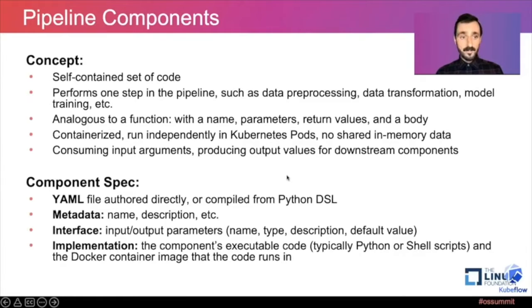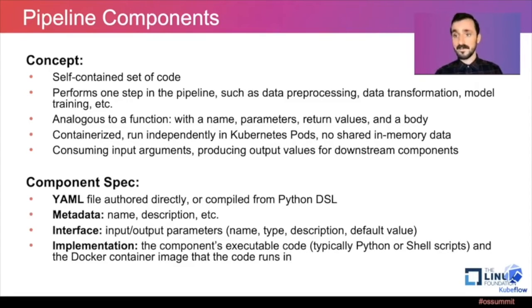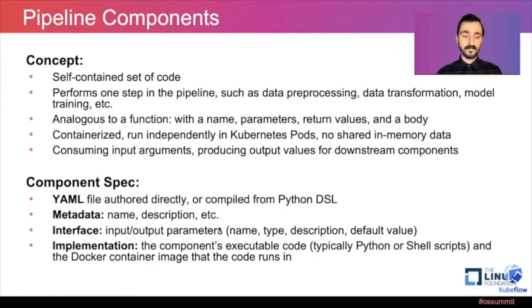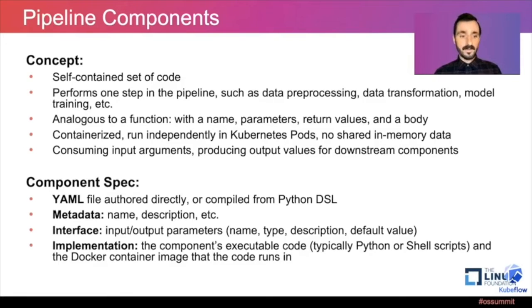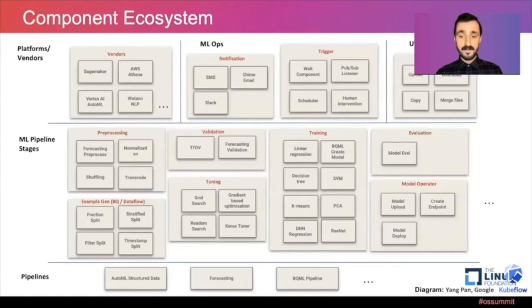The individual steps of a pipeline are called components. Components are self-contained sets of code that perform one step in the pipeline, such as data processing and transformation or model training. They're kind of like a function with name, parameters, return values, and a function body. Components are containerized and run in Kubernetes pods. The component spec itself is a YAML file, which can be offered directly or compiled from a Python DSL.